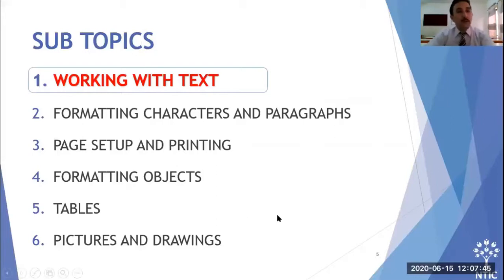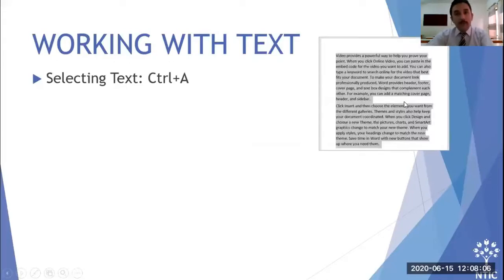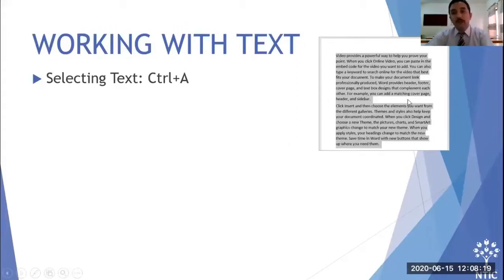Today we have six sub-topics: working with text, formatting characters and paragraphs, page setup and printing, formatting objects, tables, and pictures and drawings. Starting with working with text — to select all text, use Ctrl+A. This selects all text and pictures in your document. You can also double-click or use the mouse to select.